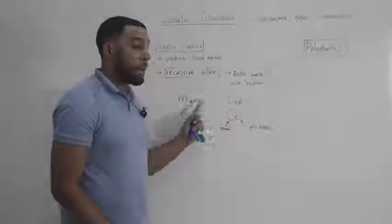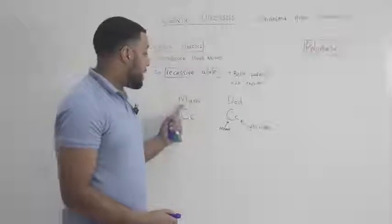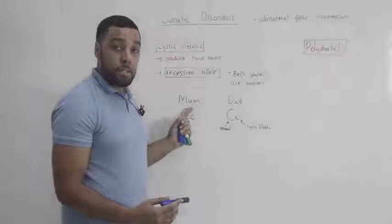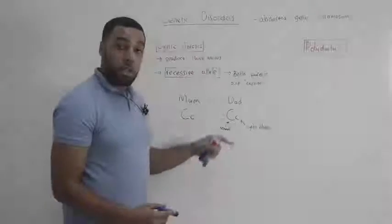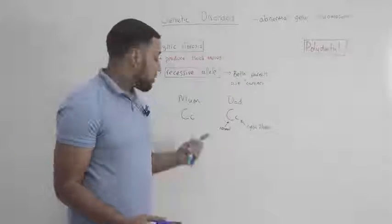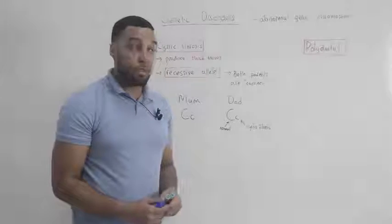The parents in this example won't display any of the symptoms of cystic fibrosis because you need two alleles, two of the recessive alleles to have the characteristic.